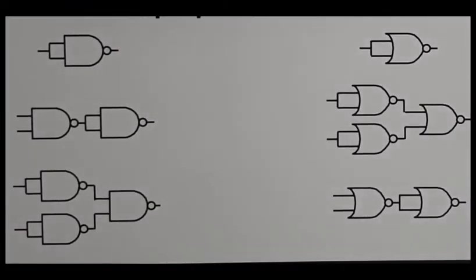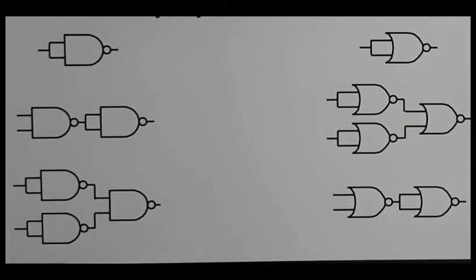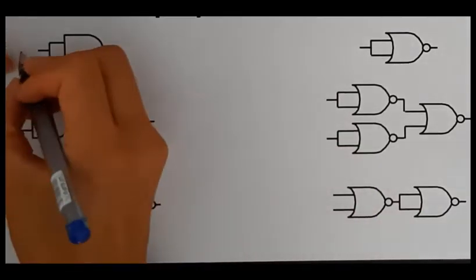So NAND and NOR gates actually have universal properties which means that you can make all of the other types of logic gates out of a NAND or NOR gate. So I'll show you a couple of examples and then I'll leave the rest for you to do yourselves.